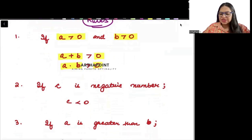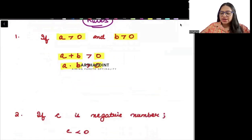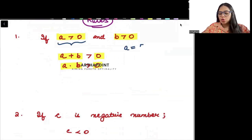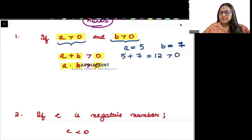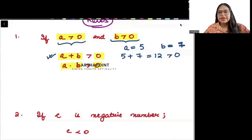Let's take a quick example. If a is greater than 0, I can take a to be any positive number — say 5. And b greater than 0, take b to be 7. So what will be a plus b? 5 plus 7 equals 12. And 12 is greater than 0. So this is satisfied.